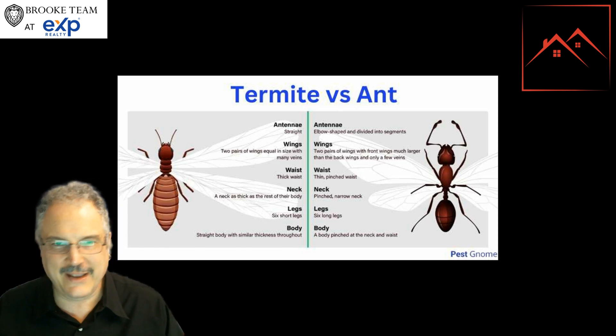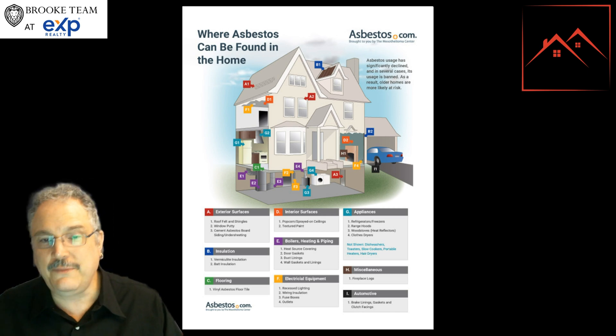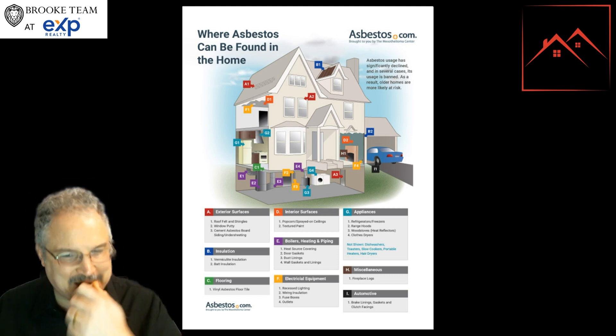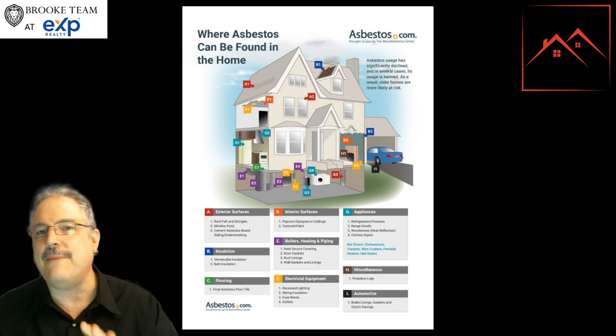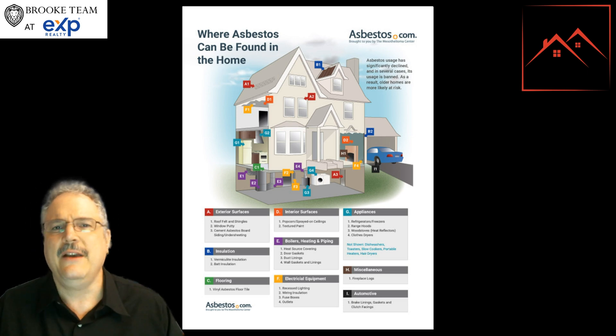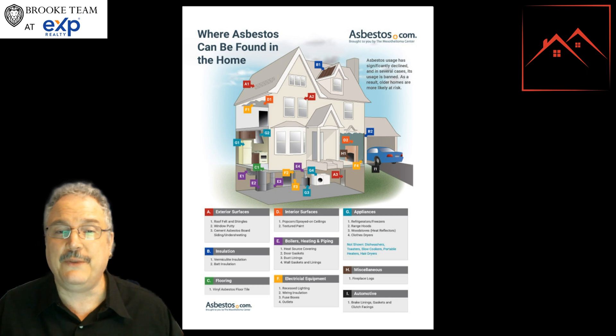Asbestos: in older homes — I believe around the 1960s, though don't quote me on that — asbestos stopped being used, but in older homes you will find it in many different locations. The most common places we still see it are in flooring tiles, ceiling tiles, insulation in the attic, and on mechanicals if they're old enough. There are a lot of places it can be, so we definitely need to talk about that with the home inspector.